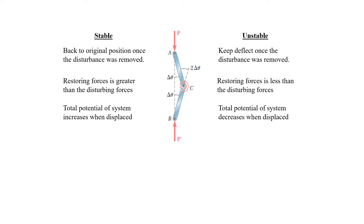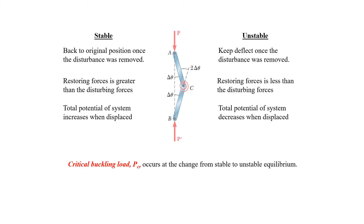Next is the total potential. The total potential for the stable state is increased, while the total potential of the system for the unstable state is decreased. Therefore, the buckling load PCR occurs in between — at the transition from the stable state to the unstable state.